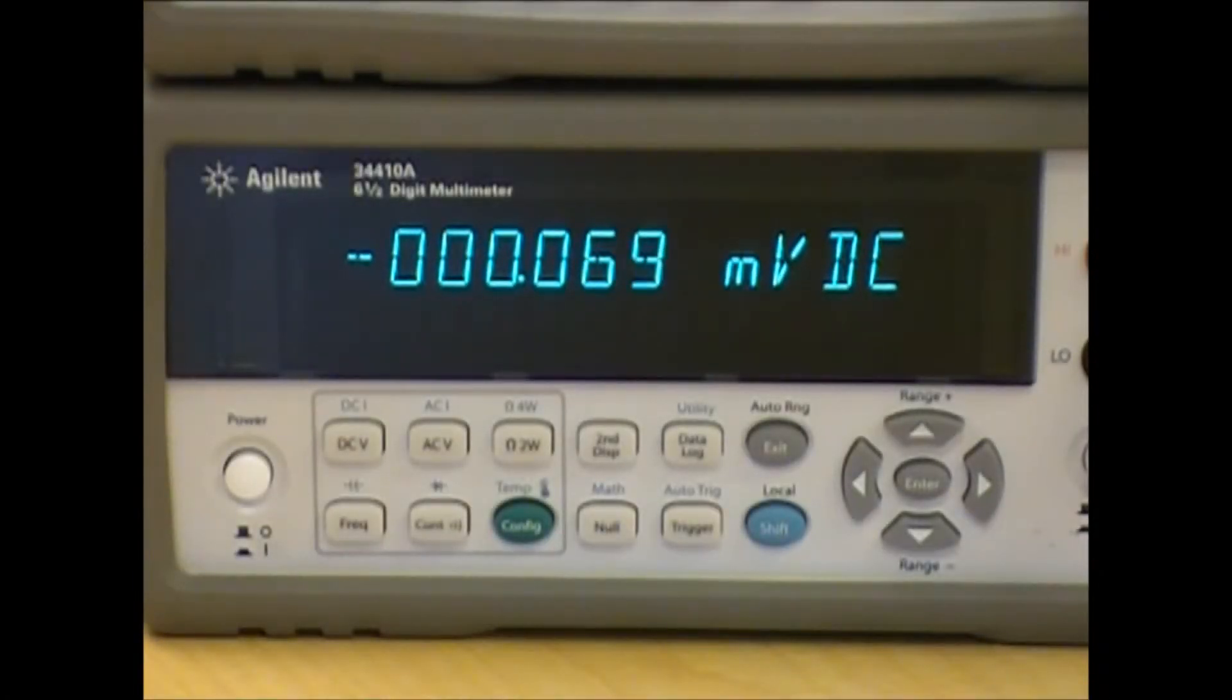Now that we have the function generator set up, I'm going to output the signal and we can look at the display on the DMM. Sure enough, we are measuring approximately 2 volts DC. But remember we had an AC signal that was superimposed on top of 1 volt peak to peak.